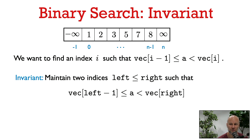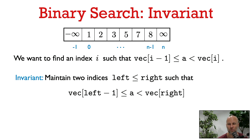Now we're going to look at an algorithm to find this index, which is called binary search. In binary search, we maintain two indices called left and right, with the property that the entry of the vector at left minus 1 is less than or equal to a, and the entry of the vector at right is strictly greater than a. The idea is to maintain this invariant while moving left and right closer and closer together until they're equal. Once left is equal to right, we've found the index i we're looking for, and we can output it.